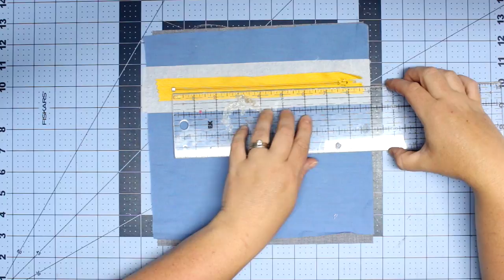So now I'm just going to iron and make sure those edges are nice and crisp. Then we can start the actual zipper installation.